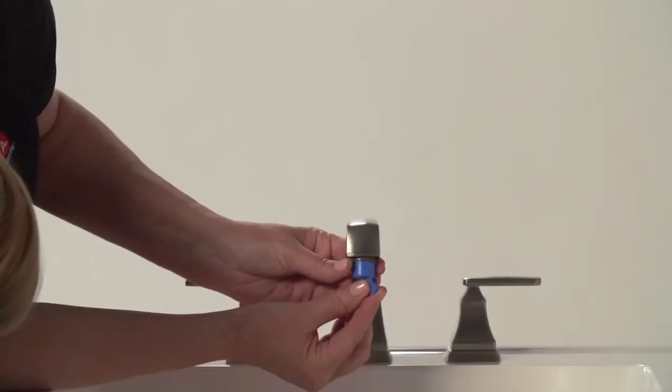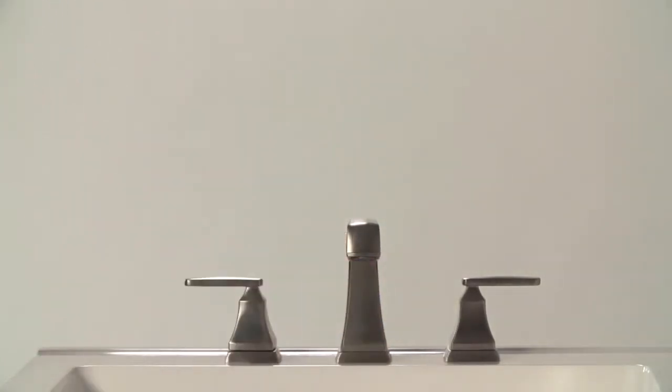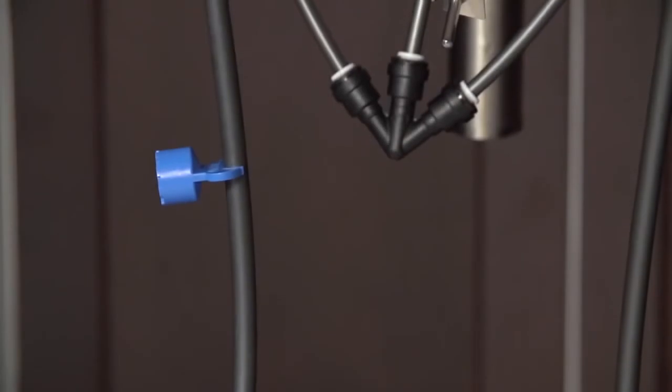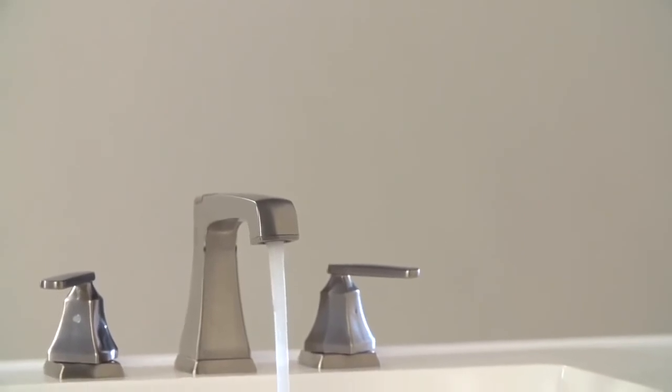Finally, reinstall the aerator outlet using the special wrench and check for any leaks underneath the sink. Clip your aerator wrench to the supply tube for future use. If everything is working properly and no leaks are found,